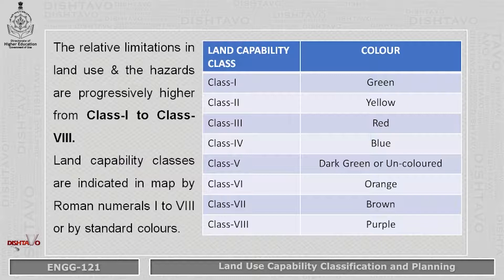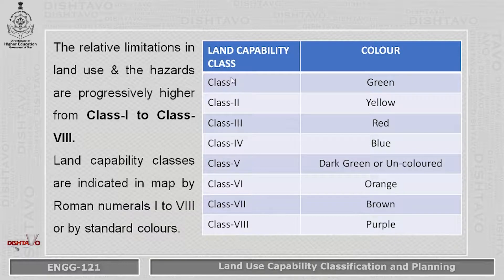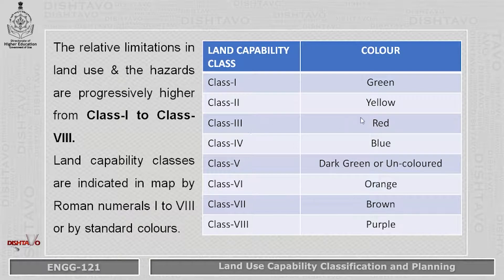In this table, the land capability classification is given from class 1 to class 8. These Roman numerals — 1 up to 8 — give the class numbers, and each is denoted by a different color on the land capability map. Class 1 is denoted by green color, class 2 is denoted by yellow color, class 3 is red color, and likewise for class 8, it is purple.